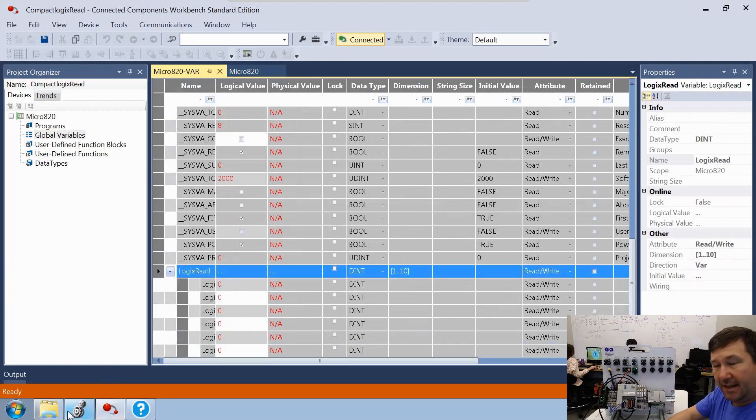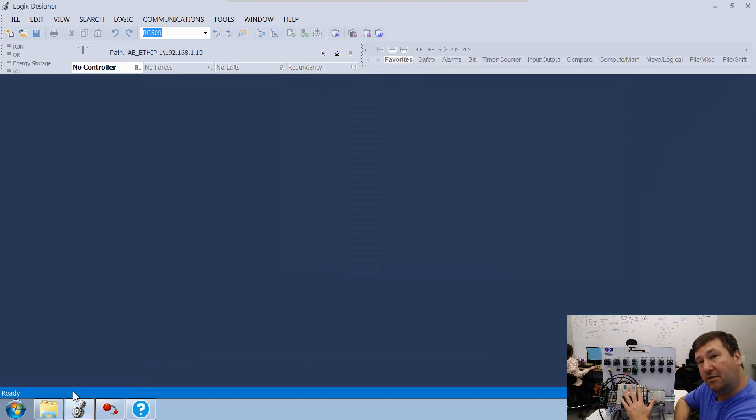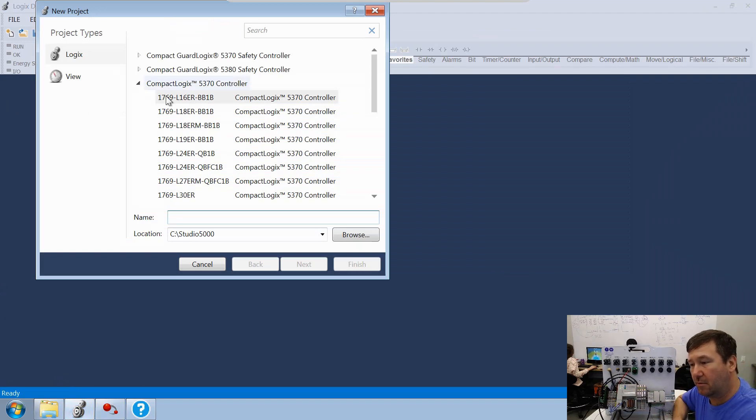Remember that. Now let's go on into Studio 5000 for the ControlLogix and CompactLogix PLC. Let's go ahead and create a new one. We're going to be using a 1769-L16ER-BB1B. And we'll just call this our CompactLogix Read.